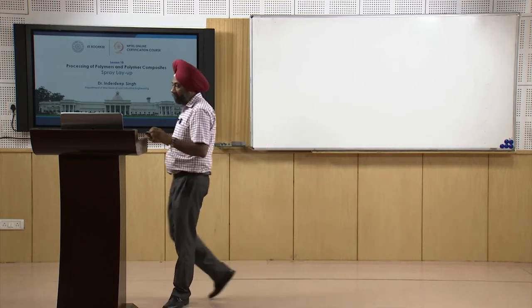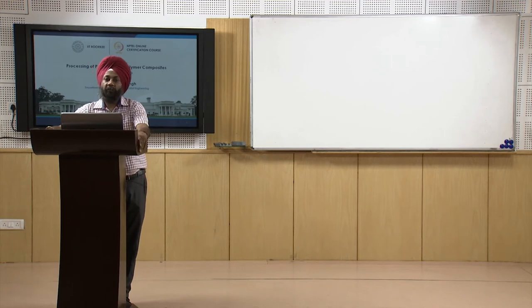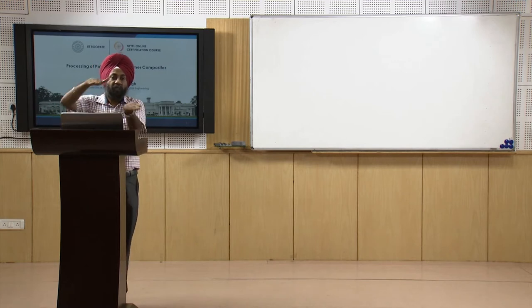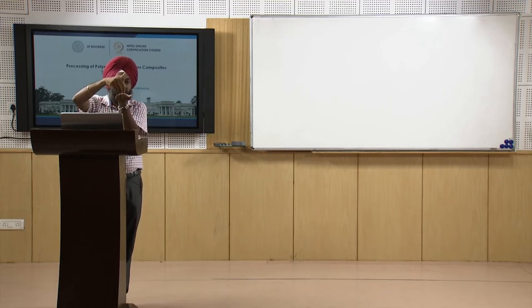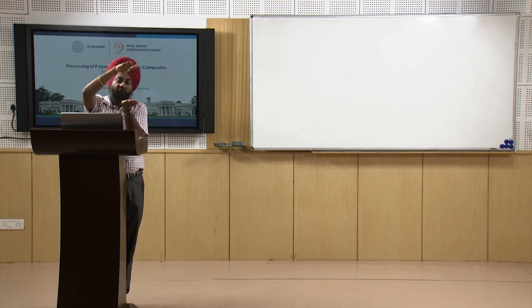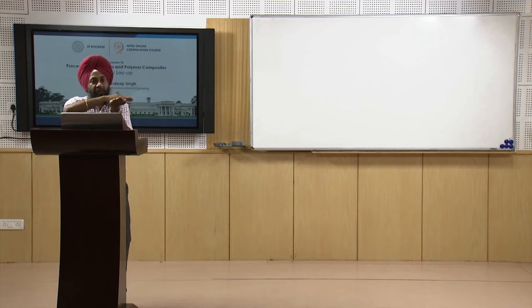We will understand the differences between hand layup and spray layup and the intricacies of the spray layup process. This process falls under the open mold category — it is not a closed mold process. In hand layup we saw two metallic plates of mold with the layup done in between, layer by layer, with the thermoset polymer applied in gel or viscous form.